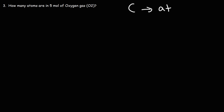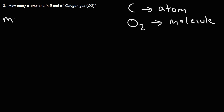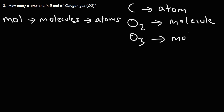Carbon, when you see the symbol C, represents an atom of carbon. Oxygen gas, O2, is a diatomic molecule — a substance with many atoms. O2 is defined as a molecule composed of two atoms of oxygen. So this will be a two-step process: convert from moles of oxygen gas to molecules, then from molecules to atoms, because O2 is not an atom itself. O3, ozone, is also a molecule made up of three oxygen atoms.